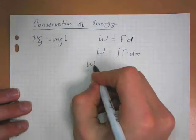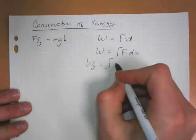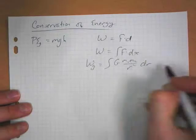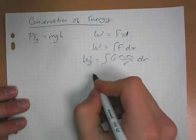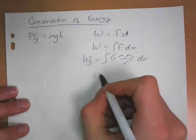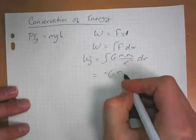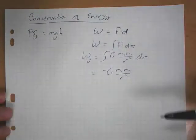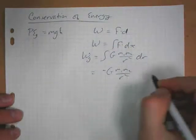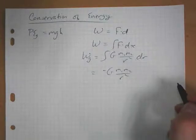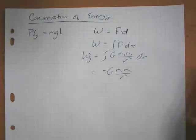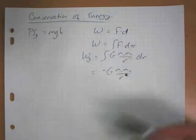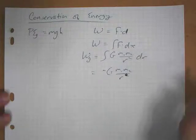So the work done by gravitational force would be the integral of GM1M2 over R squared with respect to DR. And if we take that integral, we get minus GM1M2 over R. Plus a constant, but all that ever matters physically is a change in potential energy. So we don't really care about that.